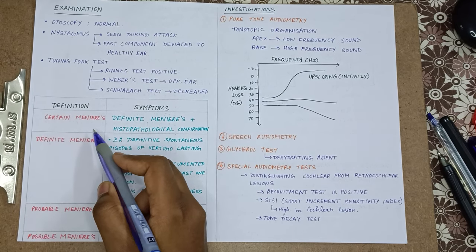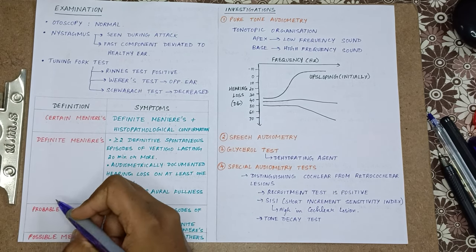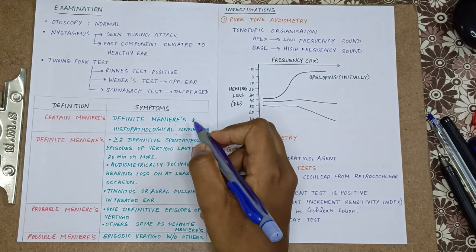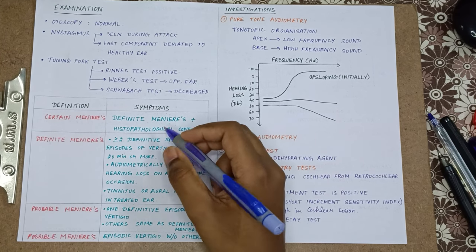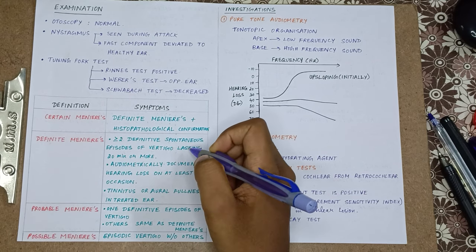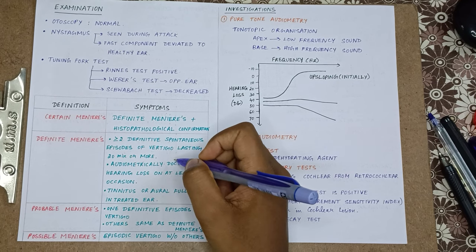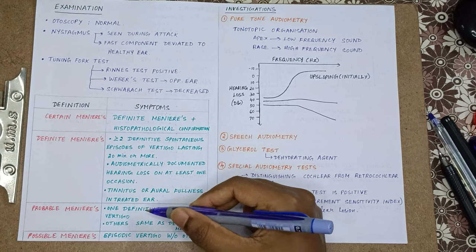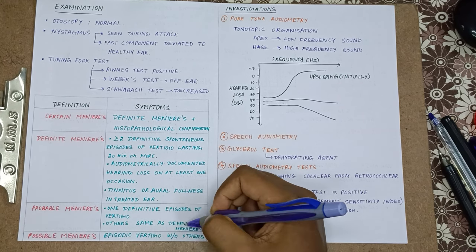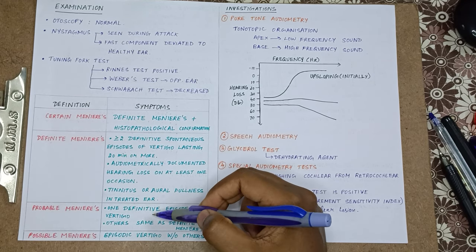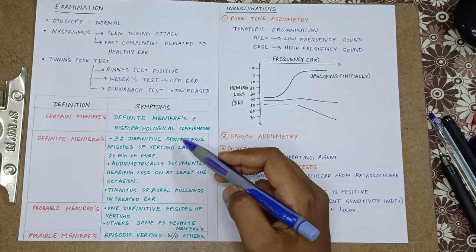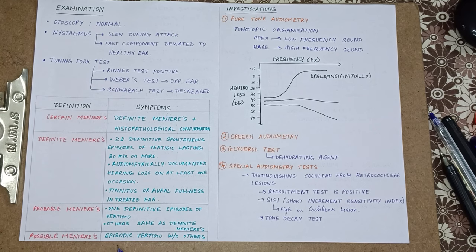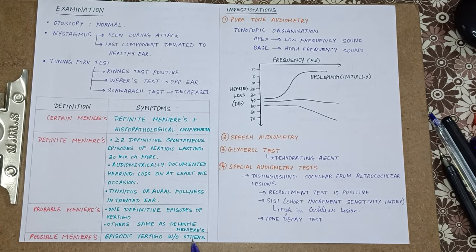Meniere's disease is classified as certain, definite, probable, and possible. Certain Meniere's is definite Meniere's plus histopathological confirmation. Definite Meniere's means two definite spontaneous episodes of vertigo lasting 20 minutes or more, audiometrically documented hearing loss on at least one occasion, and tinnitus or aural fullness in the treated ear. Probable Meniere's has one definite episode of vertigo with other criteria the same. Possible Meniere's has only episodic vertigo without any other complaints.